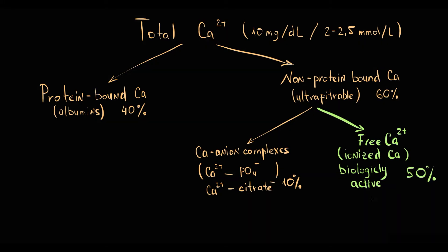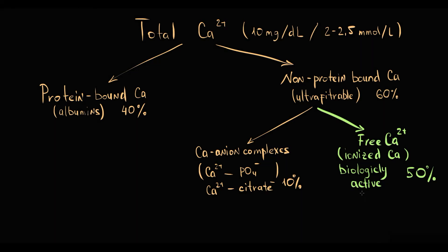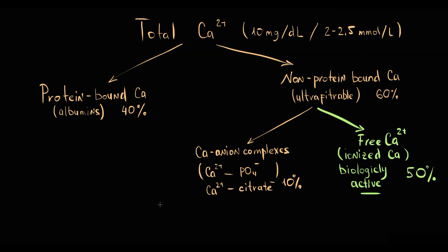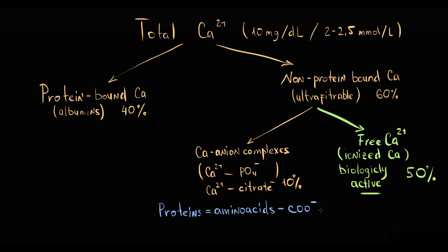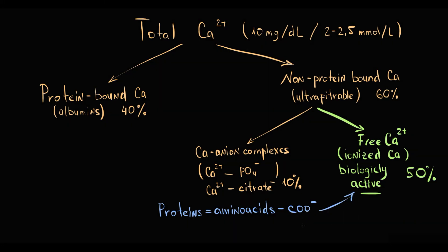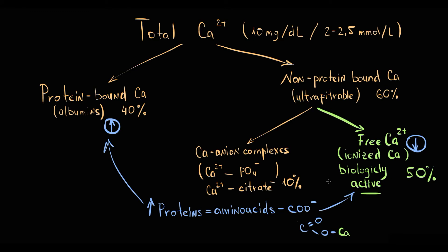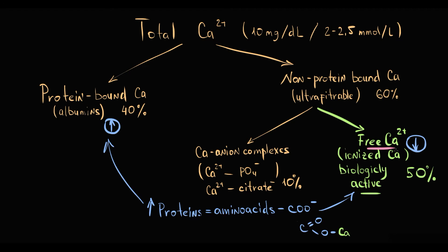All clinical symptoms due to hypocalcemia or hypercalcemia are caused by alterations in the level of ionized calcium specifically. So which factors affect the level of ionized calcium in the blood? First of all, it's proteins. Proteins consist of amino acids, and amino acids have negatively charged carboxyl groups that can bind positively charged ionized calcium.